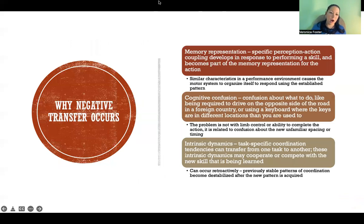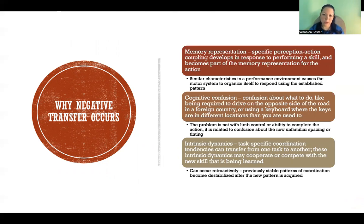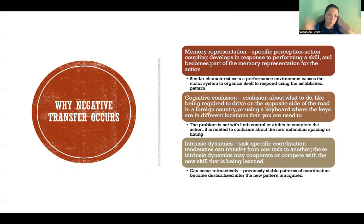There are three proposed reasons why negative transfer occurs. The first is memory representation. Specific perception-action coupling develops in response to performing a skill and becomes part of the memory representation for the action. When we practice a skill, we couple our perception of the environment and of our own body with the motor response. If we establish this memory representation and now need to produce a new response to that perception, we have to uncouple and form a new coupling — which is part of why negative transfer occurs.